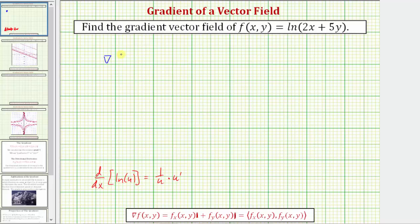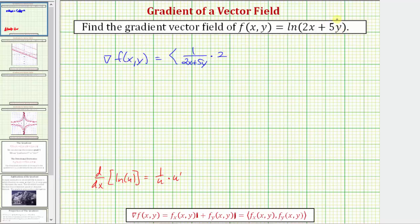So del f, or the gradient of f, is equal to the vector field where the x component is the partial derivative of f with respect to x. The derivative of ln(2x + 5y) with respect to x is one over u times u prime, or one over the quantity (2x + 5y), times the derivative of (2x + 5y) with respect to x, which is just two, because we treat y as a constant. The y component is the partial derivative of f with respect to y, which is one over u times u prime, or one over the quantity (2x + 5y), times the derivative of (2x + 5y) with respect to y — we treat x as a constant — so we just have times five.